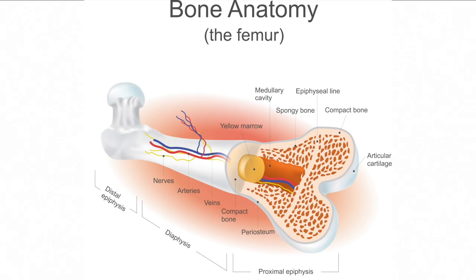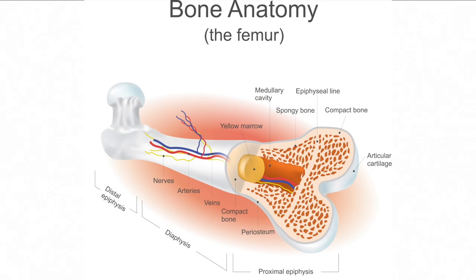The epiphysis of long bone is the site for hematopoiesis, a blood component forming procedure that occurs in red bone marrow when a person matures. Hematopoiesis moves into flat and long bones from the liver and the spleen.